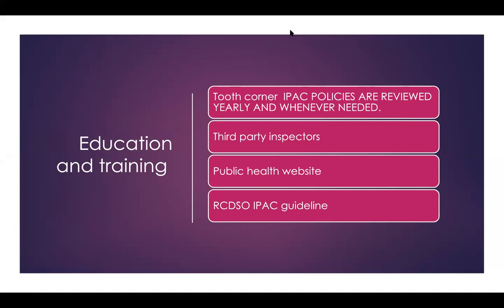The control is supposed to change color — the spores will grow in the control because it hasn't been sterilized. So you will see a color change in the control. The one that has been into the sterilizer should remain the same color — you are not supposed to see spores grow in that one. That is how you confirm sterilization was successful.